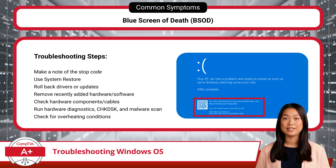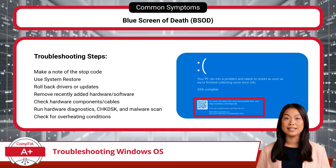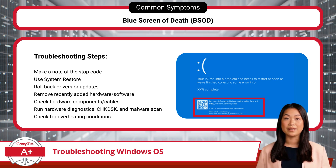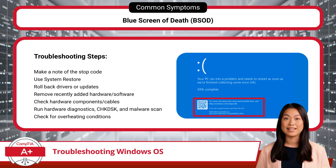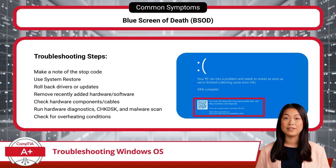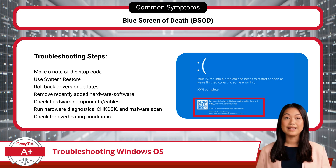To troubleshoot a BSOD, the first thing you should do is make a note of the stop code displayed on the screen. This code can help identify the type of error and guide your next steps. If the issue started recently, try using System Restore to revert the system to an earlier state, undoing any changes that might have caused the problem. Another common fix is to roll back drivers or updates, as outdated or incompatible updates can trigger BSODs. If new hardware or software was added before the BSOD appeared, remove them to see if the error resolves. You should also ensure that all hardware components and cables are properly connected, as loose connections can cause system failures.